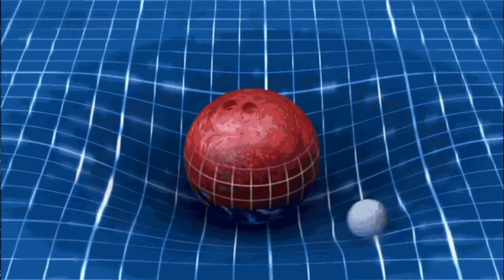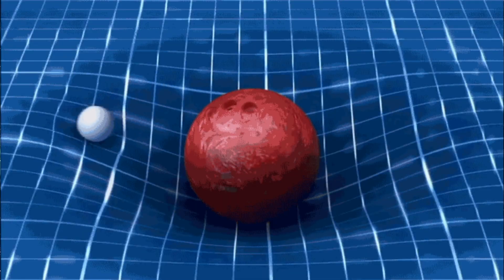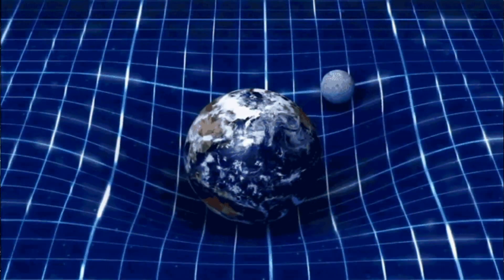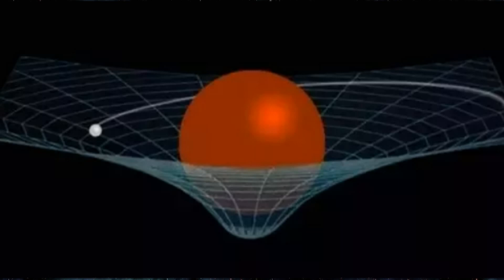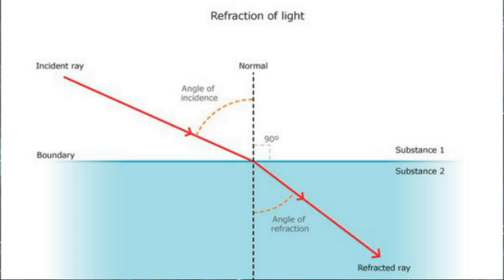Imagine a marble rolling on a flat surface with no gravity. That's light in a vacuum. Now imagine the surface curves due to a heavy object placed in the center, gravity. The marble will still roll at the same speed, but its path will bend around the object. This analogy represents how gravity bends light's path. Light can also slow down slightly when it travels through a medium like water, glass, or even air, though the effect is very minimal. This happens because the light interacts with the particles within the medium, causing a tiny delay.